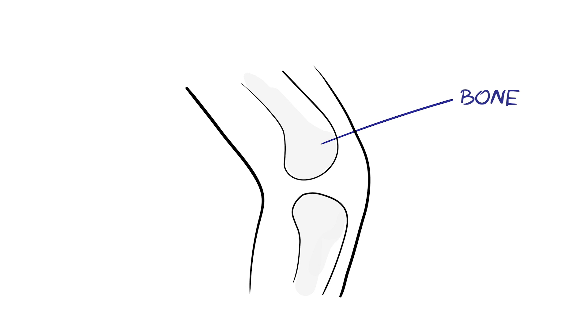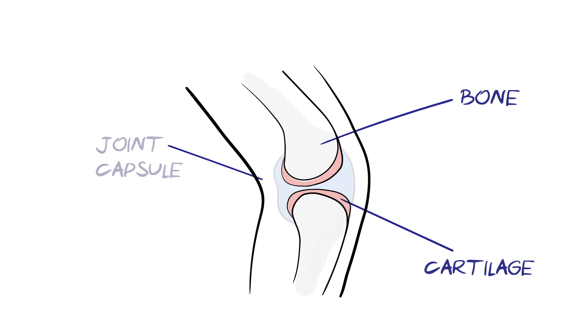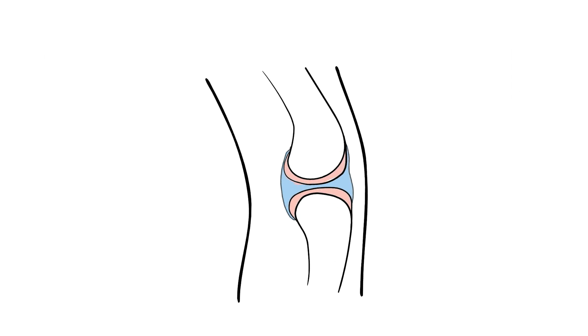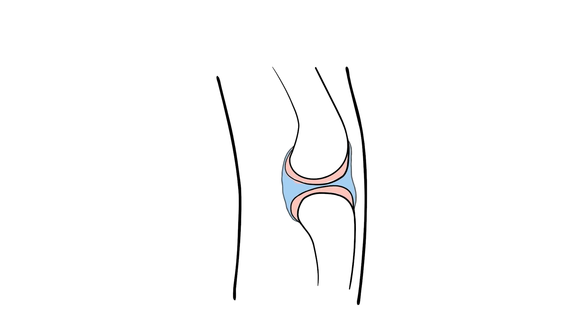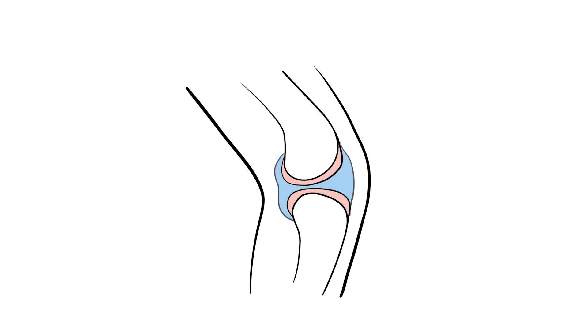But why does osteoarthritis occur? First, let's look at a joint close-up. Joints are places where two bones meet, such as the knee or elbow. In between the bones is a smooth, tough, slippery material called cartilage, which cushions the bones, and a joint capsule which is filled with fluid. During normal daily activities, our joints undergo low levels of stress and injury, which is usually repaired.